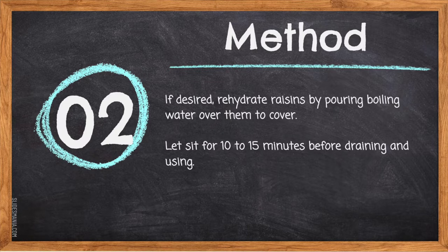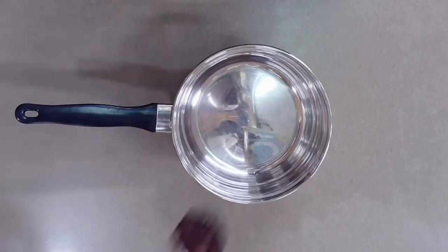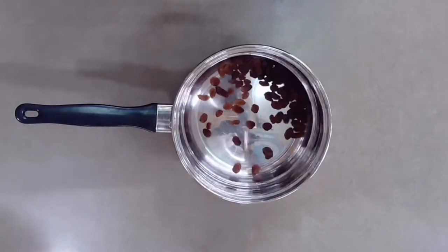Step 2: If desired, rehydrate raisins by pouring boiling water over them to cover. Let sit for 10 to 15 minutes before draining and using. You can boil water in a kettle, put your raisins into a saucepan, pour the hot boiling water on top, cover, and set aside for 10 to 15 minutes.